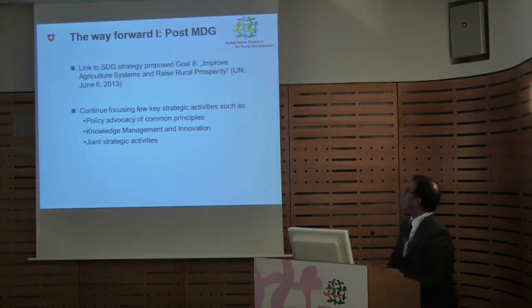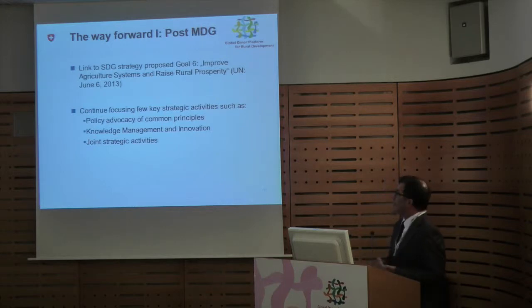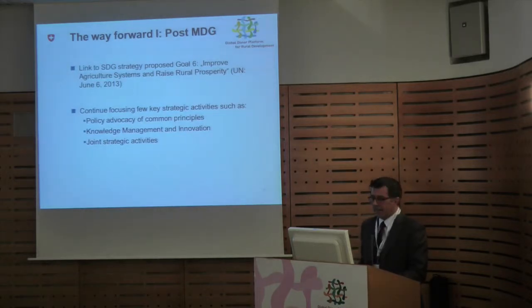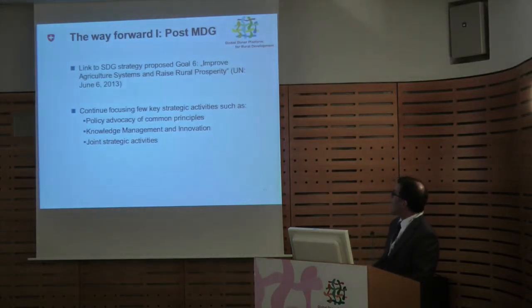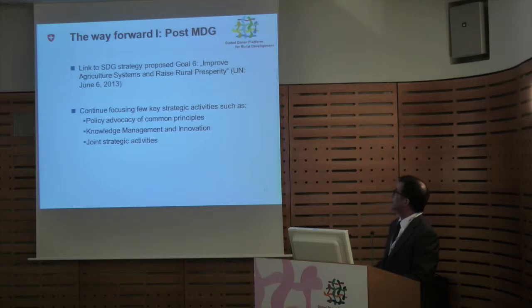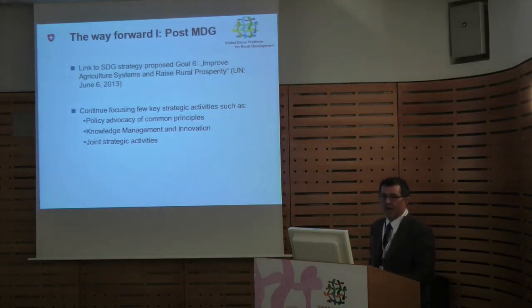Just some ideas on the way forward: post-MDG. We have heard today many times that we have to observe the SDG strategy, to influence wherever possible, and probably to align to this agenda once it is clear. In the UN report from last year in June, there is actually one goal — number six — which is called 'Improve agricultural systems and raise rural prosperity,' which is one of the areas this platform would have to look at very closely.